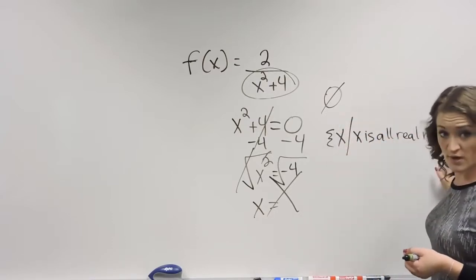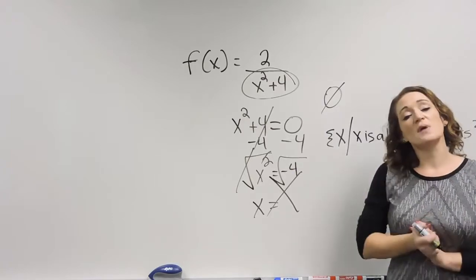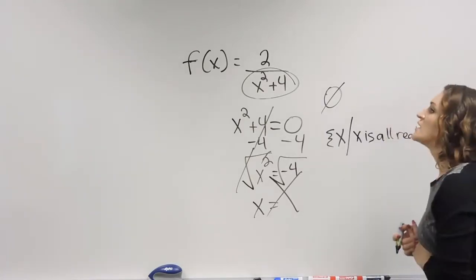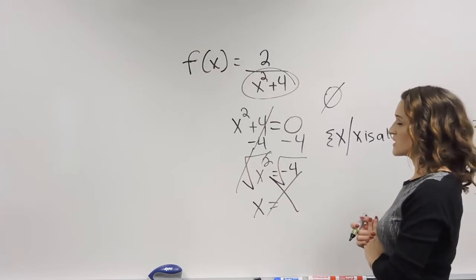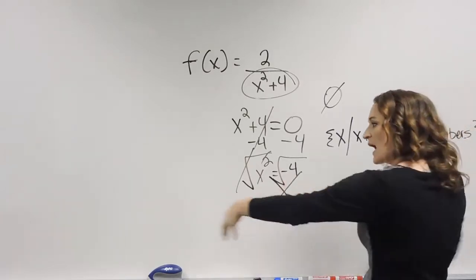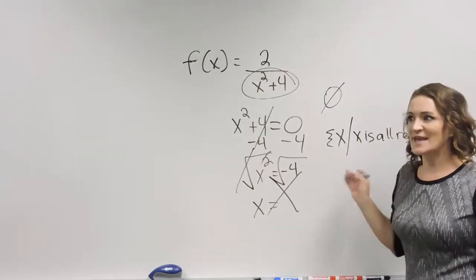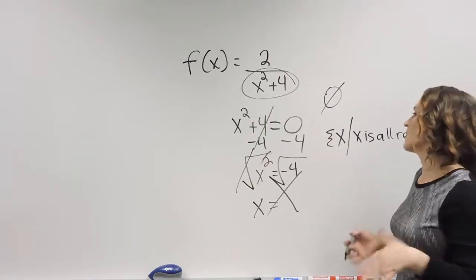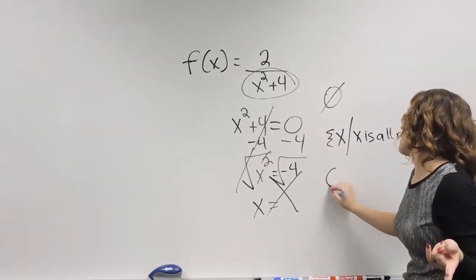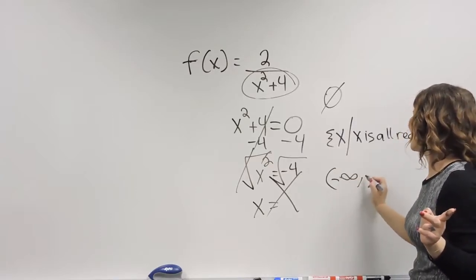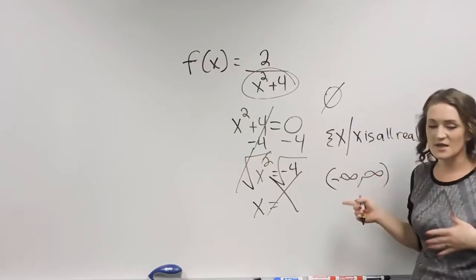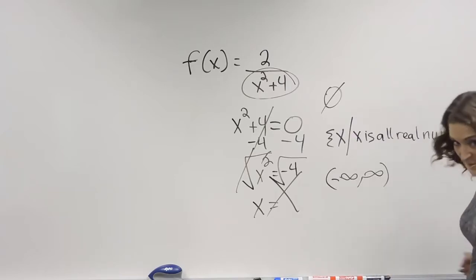Or you can also write this in interval notation. So if I'm talking about interval notation, think about a number line, the span of your number line. And if we're trying to represent every single number on the number line, then our interval notation would be negative infinity all the way to positive infinity, pretty much everything.